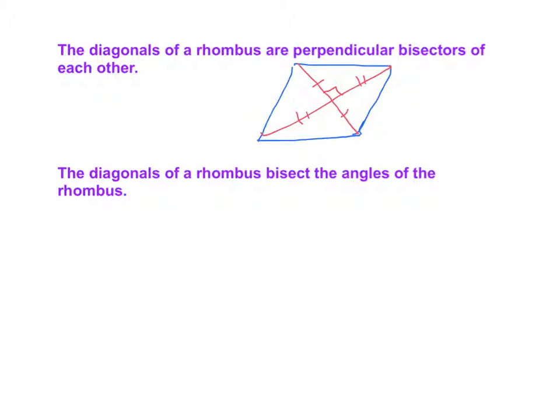Another thing, the diagonals of a rhombus bisect the angles of the rhombus. You can see here, my picture isn't great, but you can see that these angles are going to be just about congruent. And that's another conjecture about rhombuses.